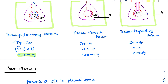Transthoracic pressure is the pressure across the thorax — the difference between intrapleural pressure (inside the thorax) and atmospheric pressure (outside the thorax). That is minus 2.5 minus 0, which equals minus 2.5 mmHg.